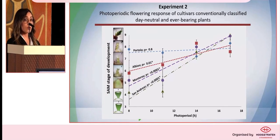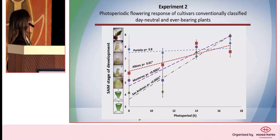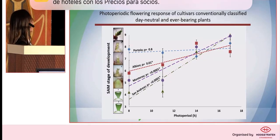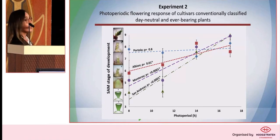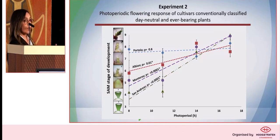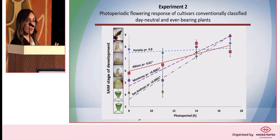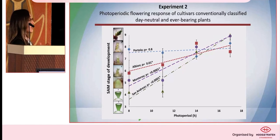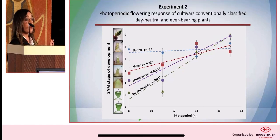Here are the results for the day-neutral cultivars. On the x-axis we have the treatments: 8 hours, 11 hours, 14 hours, and 17 hours. On the y-axis we have the development of the shoot apical meristem. Let's focus on San Andreas, which has the higher correlation. You can see that by the week we did the dissection, under the treatment with fewer hours of light, the shoot apical meristem is less developed, and under longer days, we have a flower that is way more developed. Based on statistical analysis, we can conclude that this is not a day-neutral cultivar as classified — at least for the temperature we managed, we have a facultative long day response.